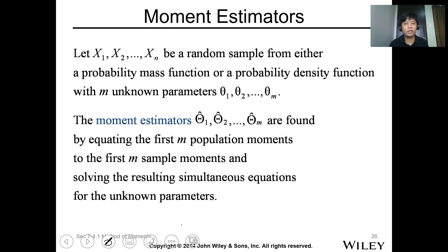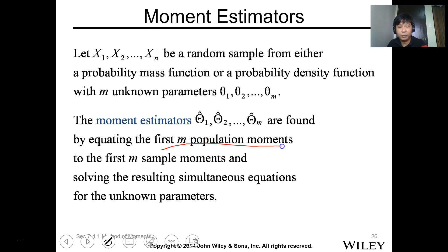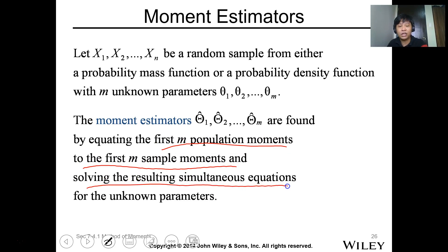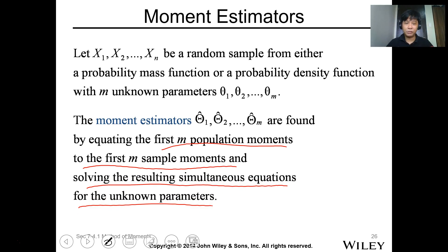For moment estimators, theta-hat-1, theta-hat-2, up to theta-hat-m are found by equating the first m population moments to the first m sample moments and solving the resulting simultaneous equations for the unknown parameters. Then we use the expressions to calculate the estimates.